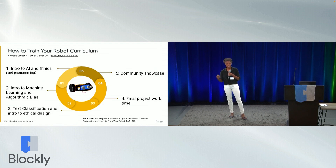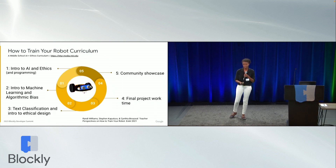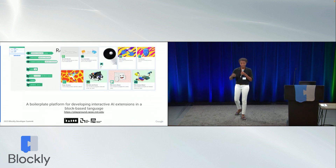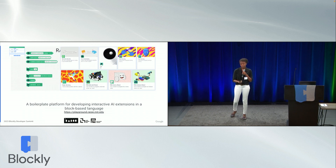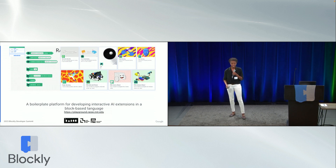Hands-on active learning looks like the last two units of the curriculum being all about students creating projects, having conversations with the community, and seeing how what they've learned applies to something they care about. We also have a custom Scratch fork called the RAISE AI Playground, a project from the Personal Robots Group and the MIT RAISE initiative. It has AI extensions where students can do image and text classification, control social robots, natural language processing, affective computing, gesture recognition, and more — all in block form.